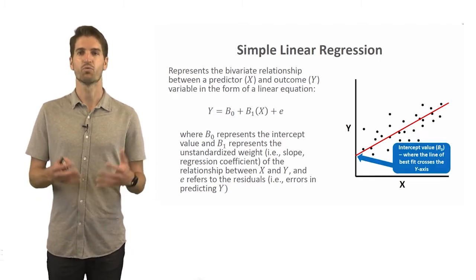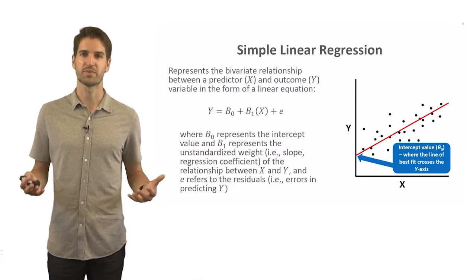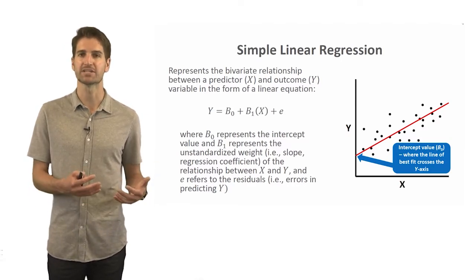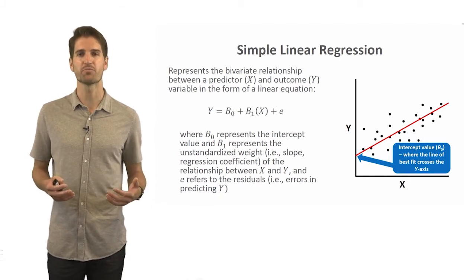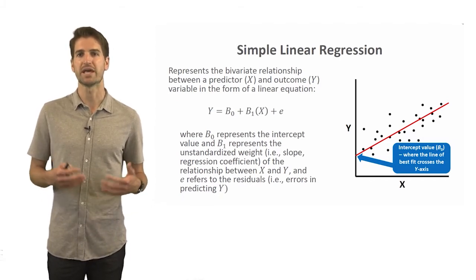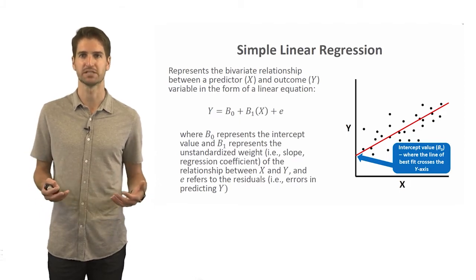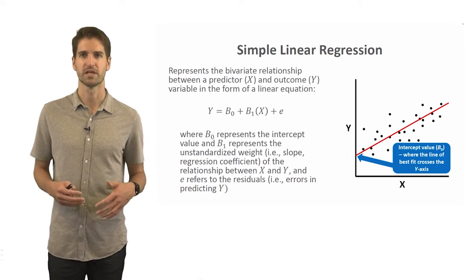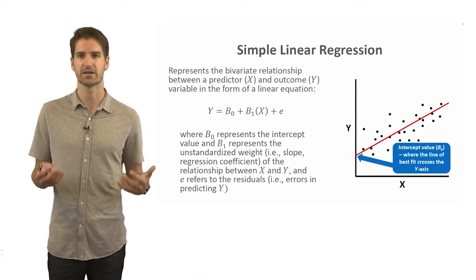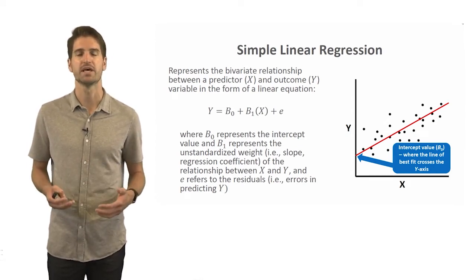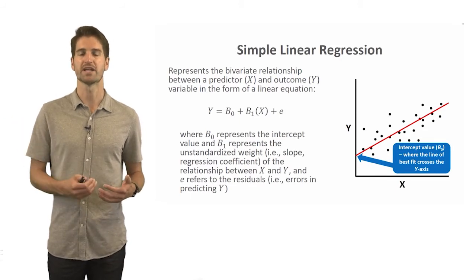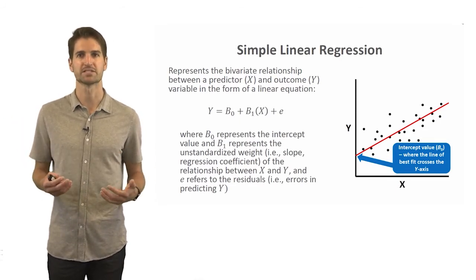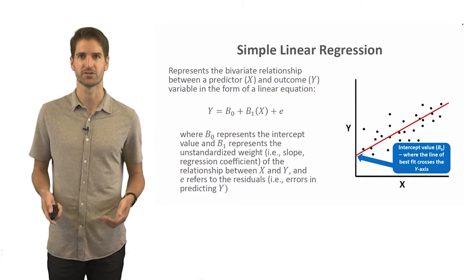Where the red line — which is our line of best fit — crosses the y-axis, this is what we refer to as the intercept value. We represent that using beta sub zero. Beta here is just that capital B letter. Sometimes you'll see it represented as a lowercase b when we're talking about unstandardized regression coefficients. Where the line of best fit crosses the y-axis is our intercept value.